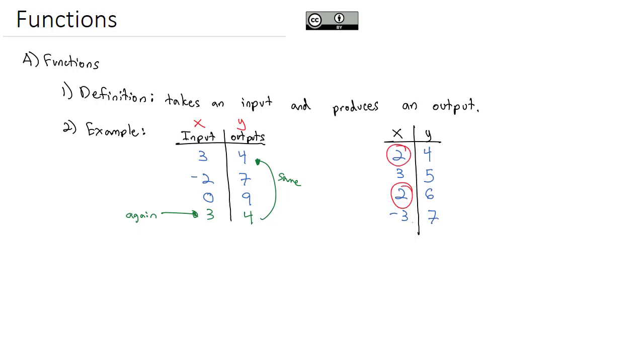2 was used as an input twice, but we got different numbers. It did not produce the same output. That means this relationship is not a function because an input did not produce a single output. In fact, let's adjust our definition and add the word single to really emphasize that each input has one possible output.